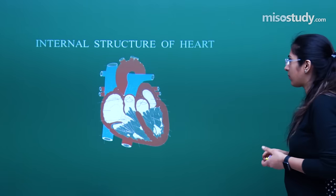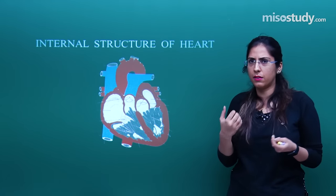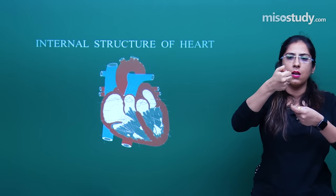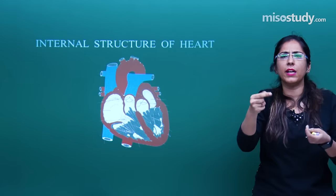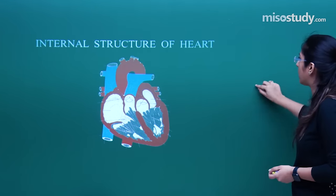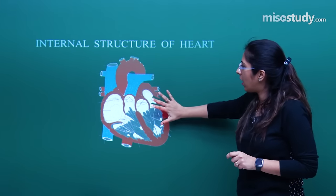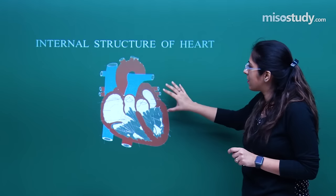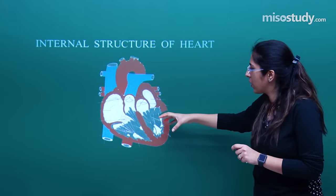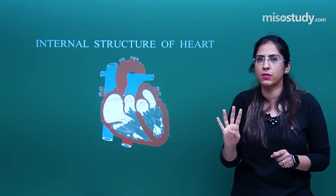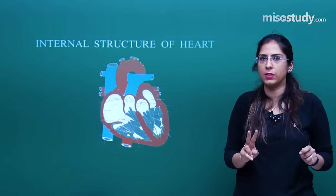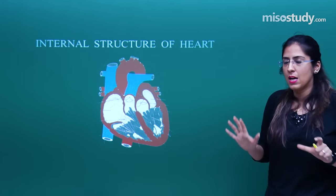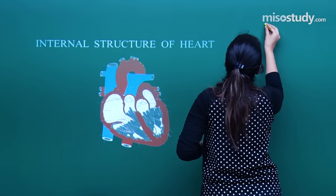Let's start the session with the structure of the heart — a general introduction. When we see an adult heart, it is like the size of our fist. It is not that heart shape that we normally draw — our heart actually looks like this. Various arteries and veins arise from it; some carry oxygenated blood, some carry deoxygenated blood. In the human heart, we have four chambers — two atria and two ventricles. The right ventricle and right atria do some separate functions; the left atria and left ventricle do some separate functions.